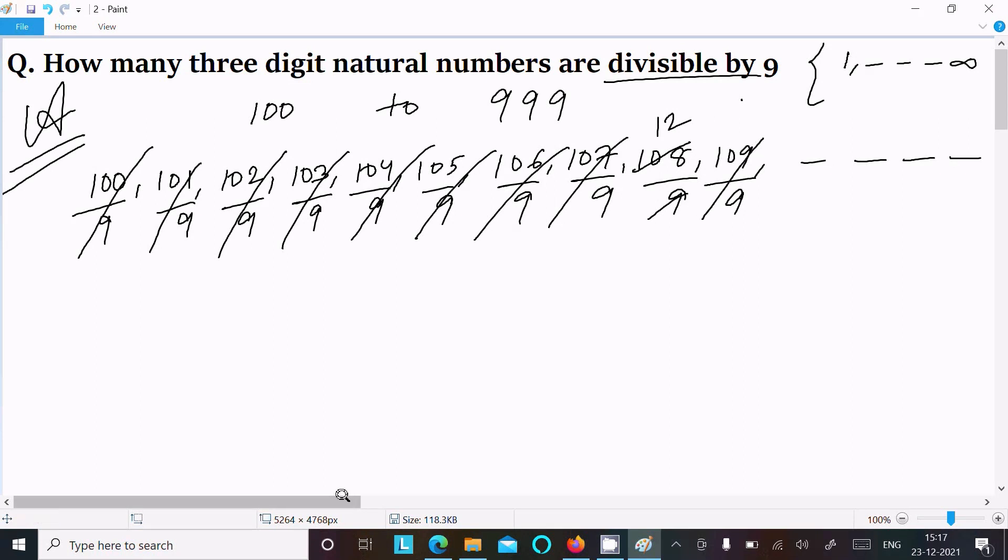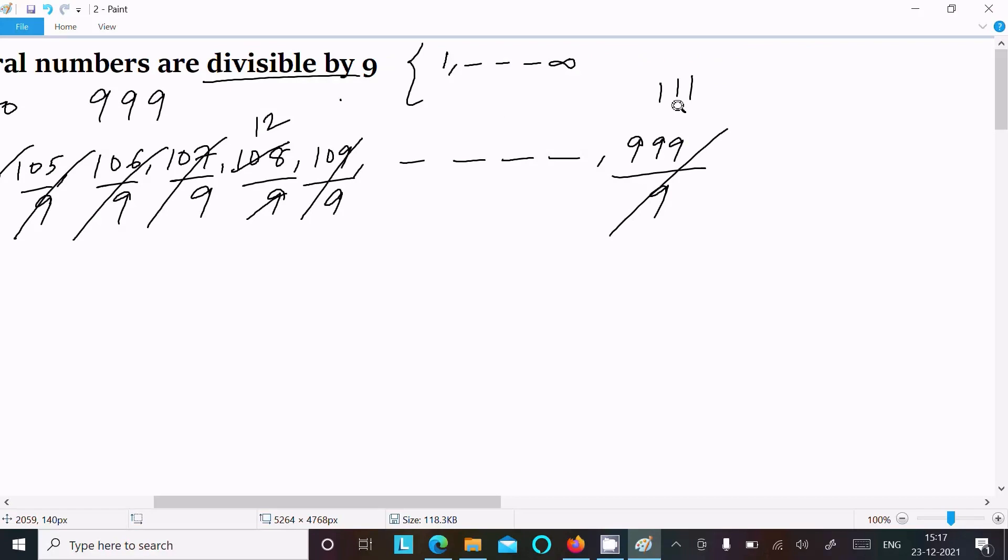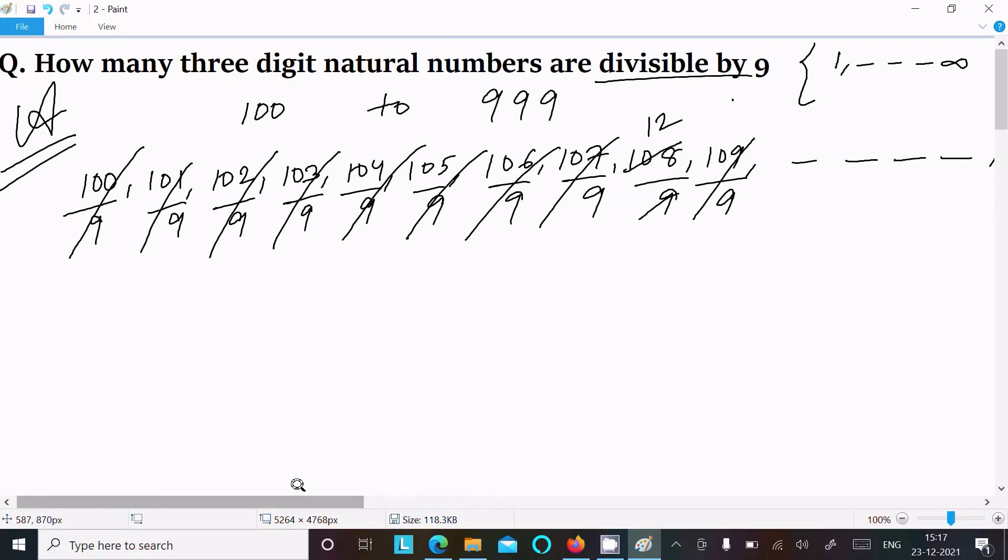From here we can easily analyze the first term. The first term is 108 since it's divisible by 9. You need to add 108 with 9, so the next number is 117.